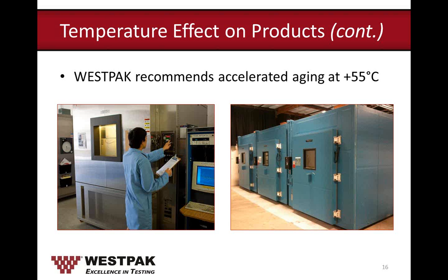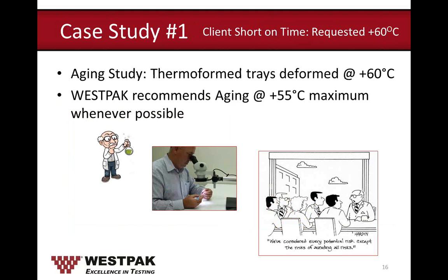Some customers are in a hurry and just want samples in the oven right away, accepting extra aging days. If you want accelerated aging conducted at a higher temperature — above 60°C — we do provide that service. However, I want to emphasize again: we don't recommend aging temperatures higher than 55°C with uncontrolled RH.